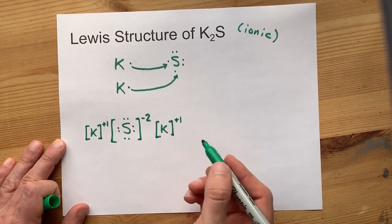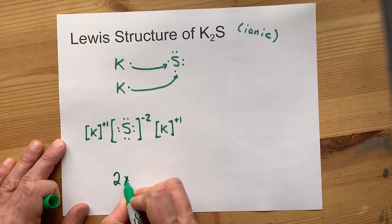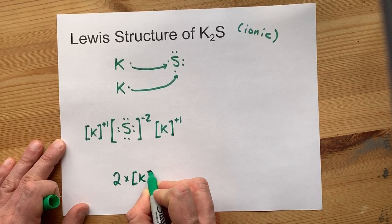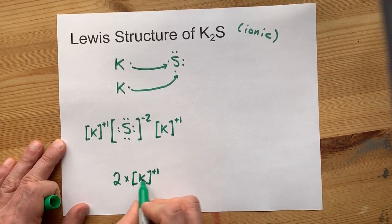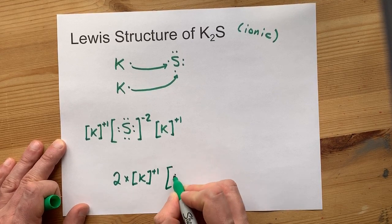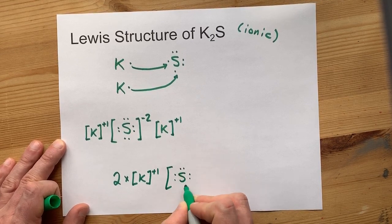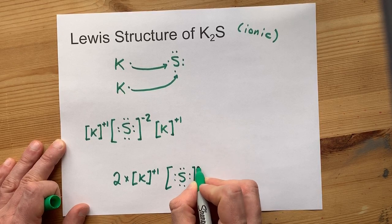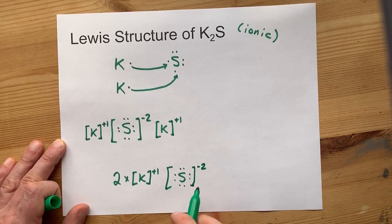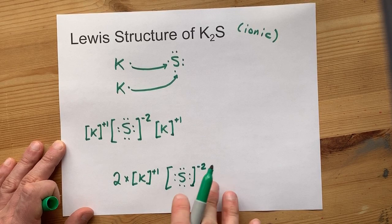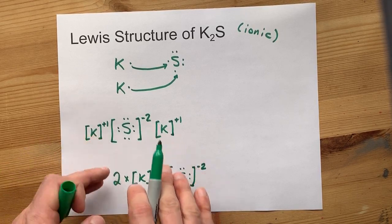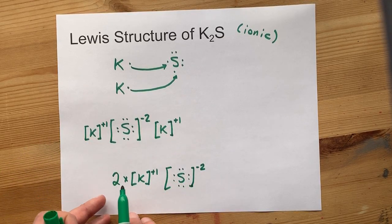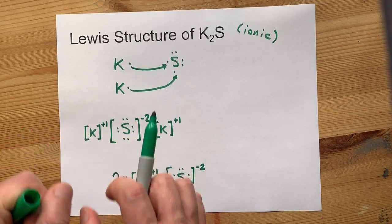You might be able to take a shortcut here. You might be able to write two times K plus one, just so you don't have to write it twice. And then you'll have to show the sulfur with its eight electrons in its outer shell and minus two charge as well. They're both valid Lewis structures.